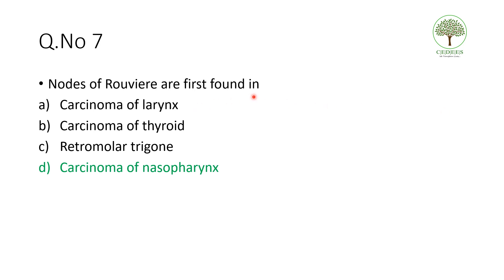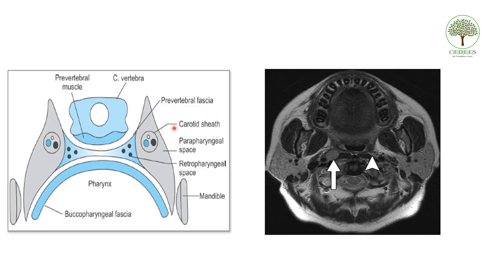Seventh question: where are the nodes of Rouvière first found? These are lateral retropharyngeal lymph nodes lying between the carotid artery and the prevertebral muscles. The uppermost positioned node, anterior to the atlas vertebra (C1), is called the node of Rouvière. It is usually involved in carcinoma of the nasopharynx. In radiographs, an enlarged node can be seen in the retropharyngeal region between the carotid sheath and prevertebral muscles.